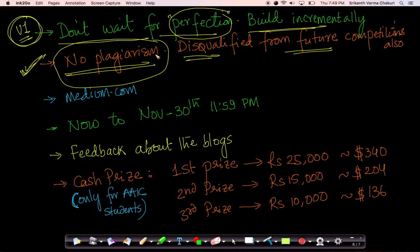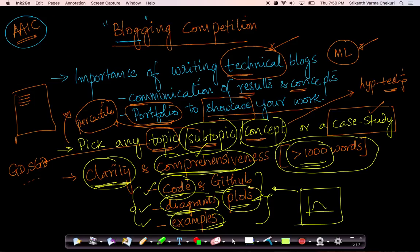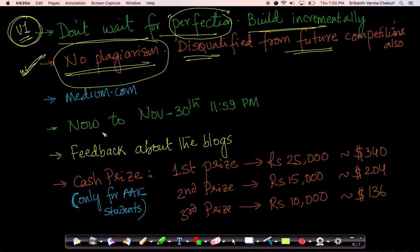Anybody found plagiarizing code — suppose if you want to use a diagram from someone else, just paste the diagram but give the credit. Say that this has been copied from such-and-such source. That's okay. You might have seen me doing it in the course. When I use someone else's diagrams or someone else's blog, I clearly state that this is where we are taking this information from. We should always give credit to the source.